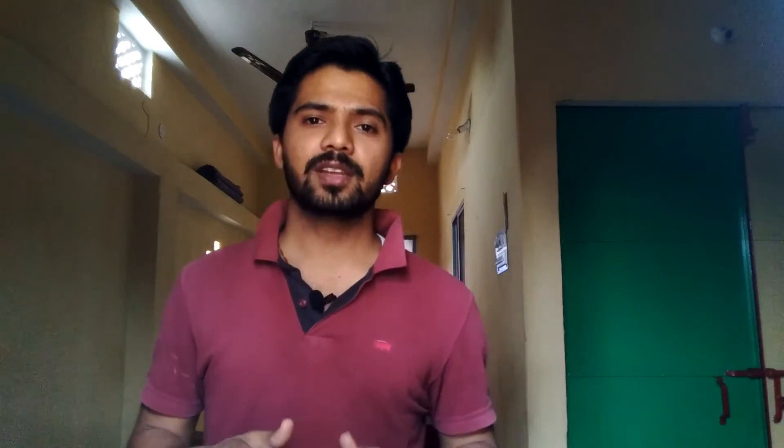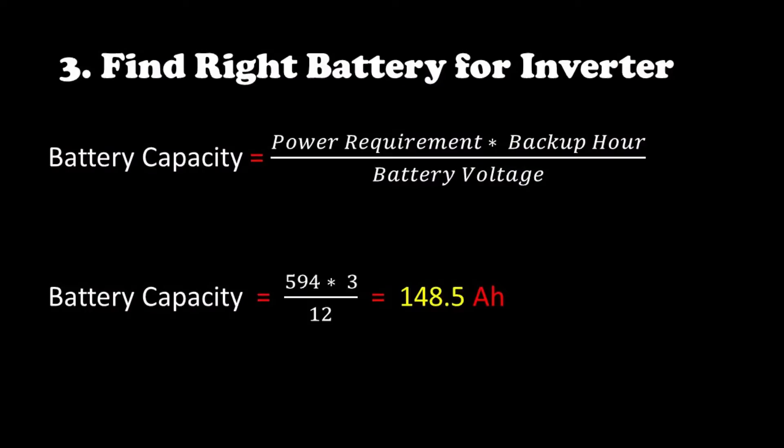Putting all values into the formula: battery capacity equals 594 watts (power requirement) multiplied by 3 hours (backup hours), divided by 12 volts (battery voltage). Calculating these, we get 148.5 ampere-hours, which is the battery capacity. I could go with a 150 AH battery, but I prefer to go with a slightly higher capacity battery, so I choose a 165 AH battery.